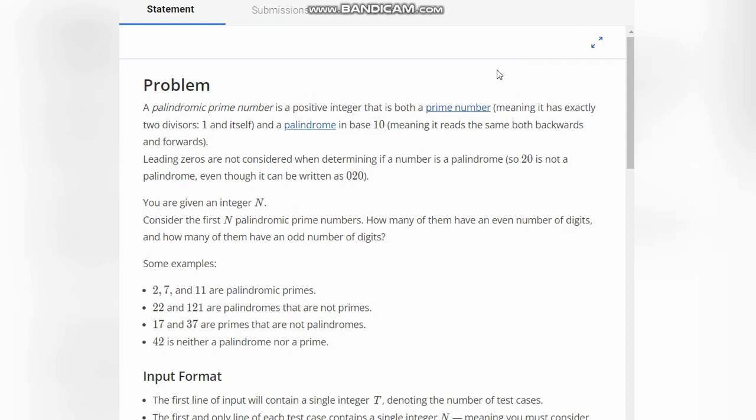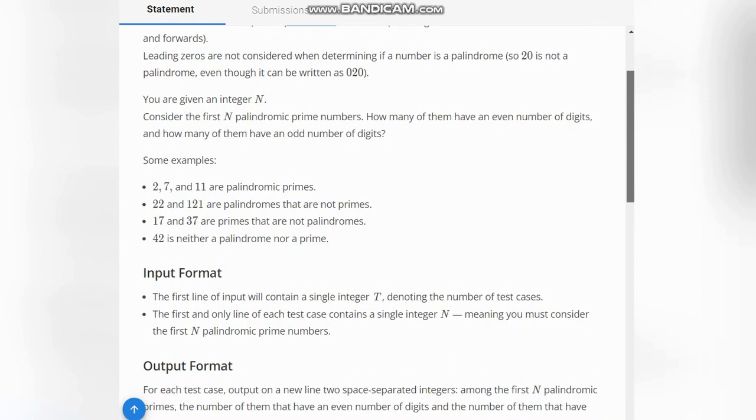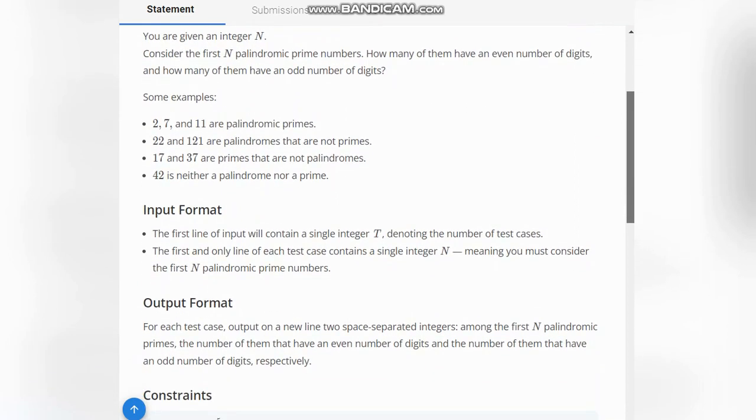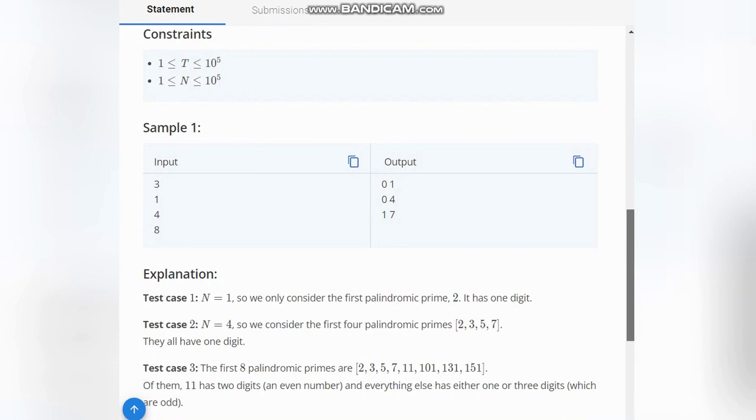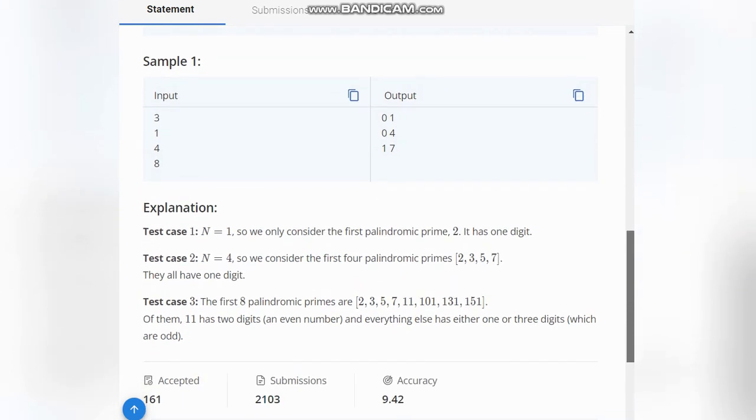backwards and forwards. Leading zeros are not considered when determining if a number is a palindrome, so 20 is not a palindrome even though it can be written as 020. You are given an integer N. Consider the first N palindromic prime numbers - how many of them have an even number of digits and how many have an odd number of digits? Here are some examples. Let's go to the test cases.